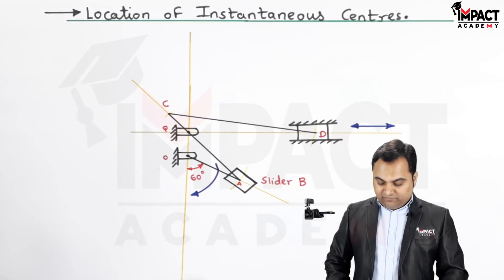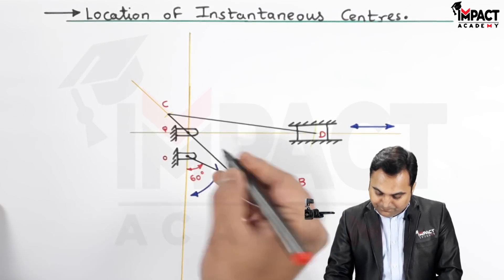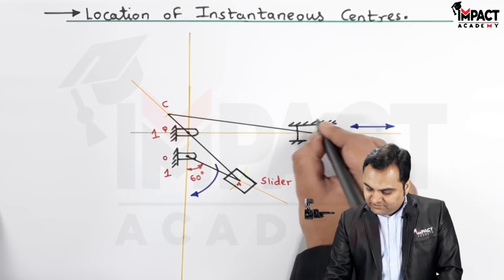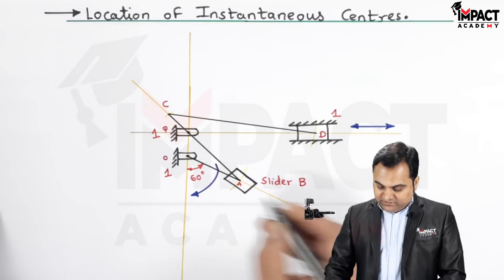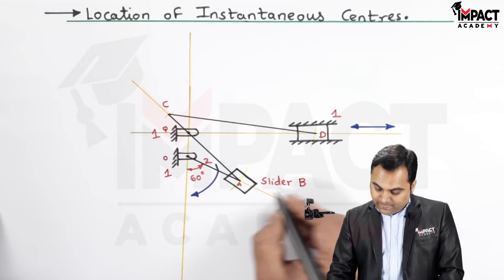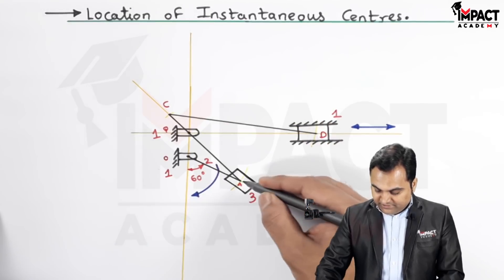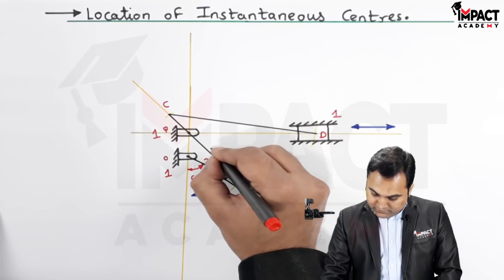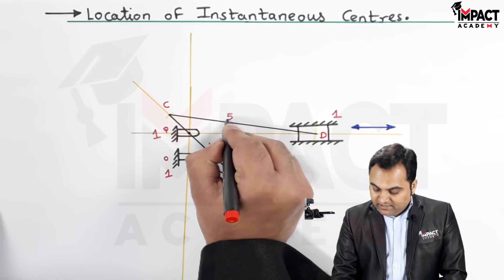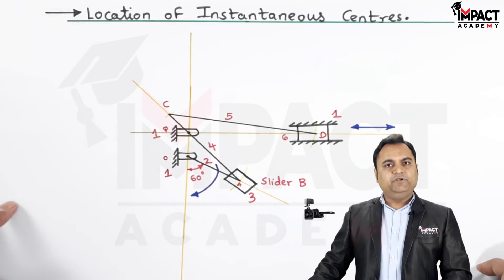To find the number of ICRs, we first need to know how many links are in the mechanism. The fixed link is link 1. The crank OA is link 2. The slider connected to crank OA is link 3. Link AC, connected to the slider and link 2, is link 4. Link CD is link 5, and slider D is link 6. So it is a 6-link mechanism.